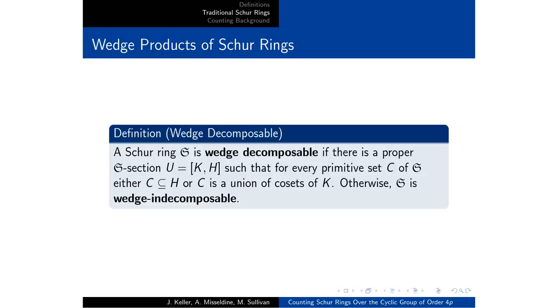A property of Schur rings that we're interested in is wedge decomposable. We say that it's wedge decomposable if there's a proper S-section such that every primitive set is a subset of H or a union of cosets of K. Otherwise we say it's wedge indecomposable. This is going to be tied very heavily in with our wedge products construction and counting for our particular problem.